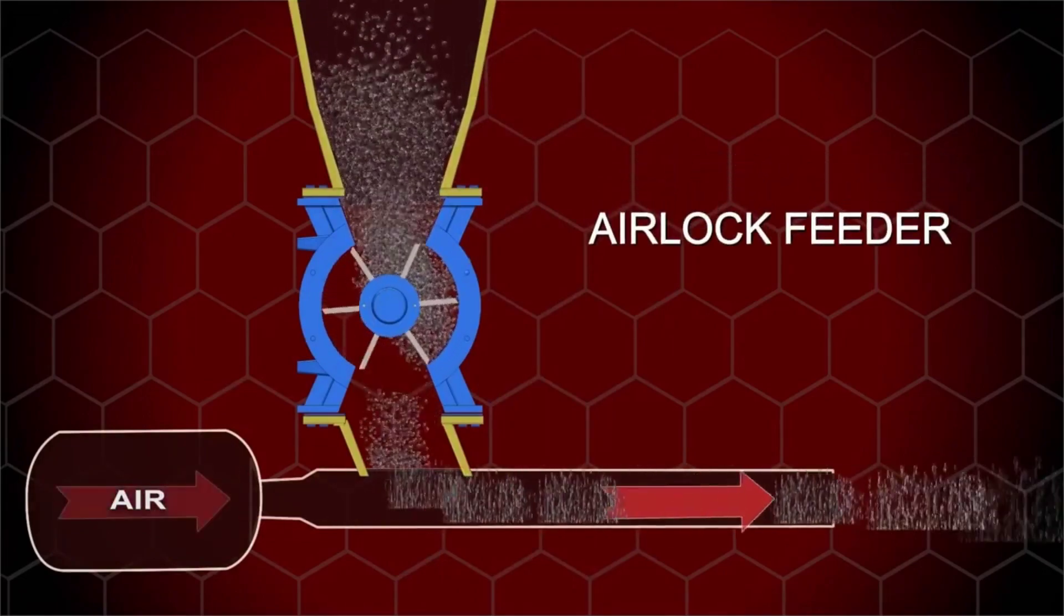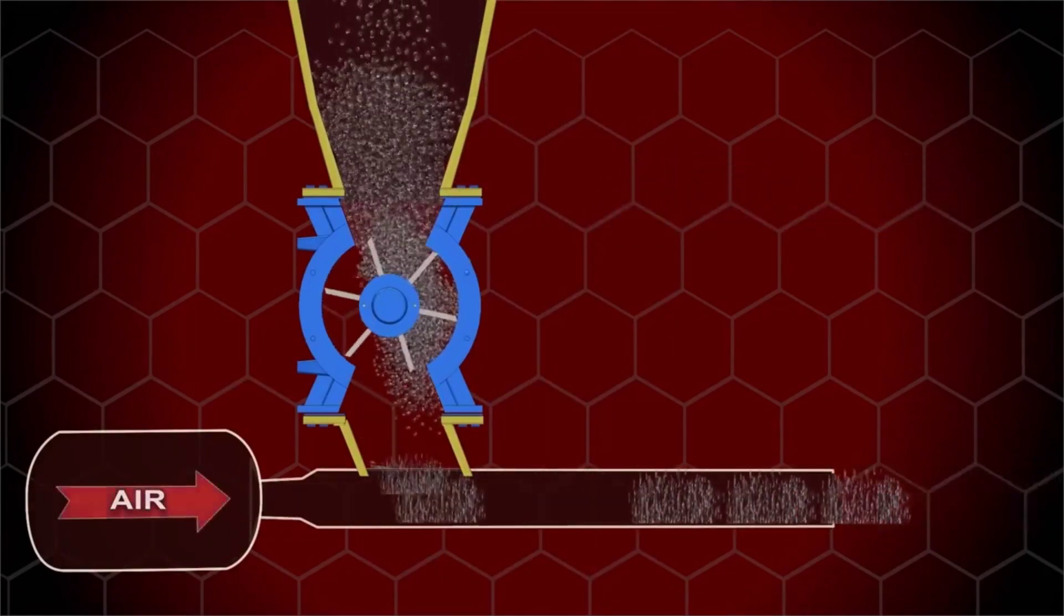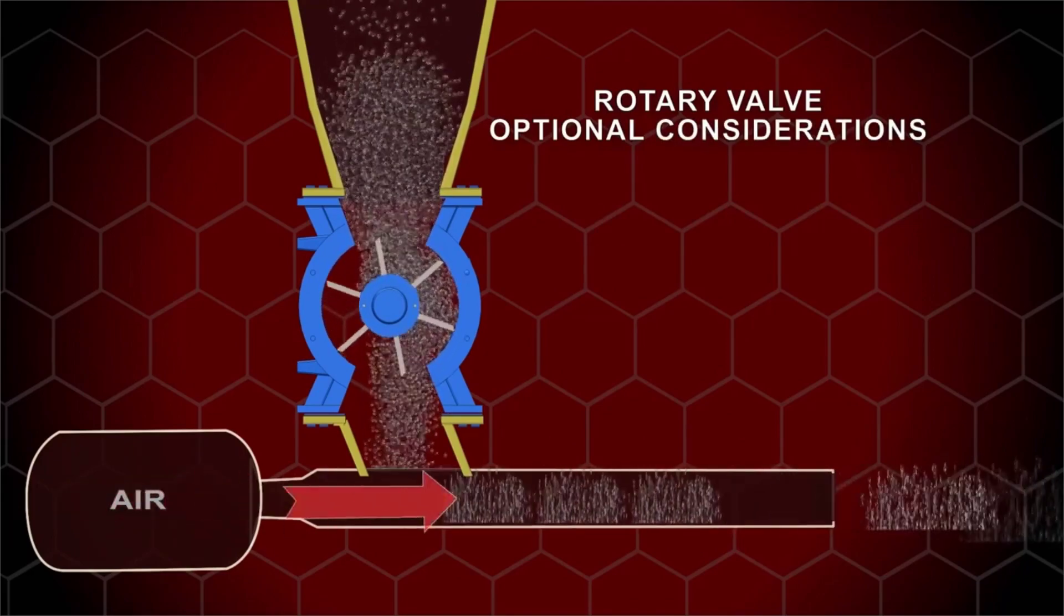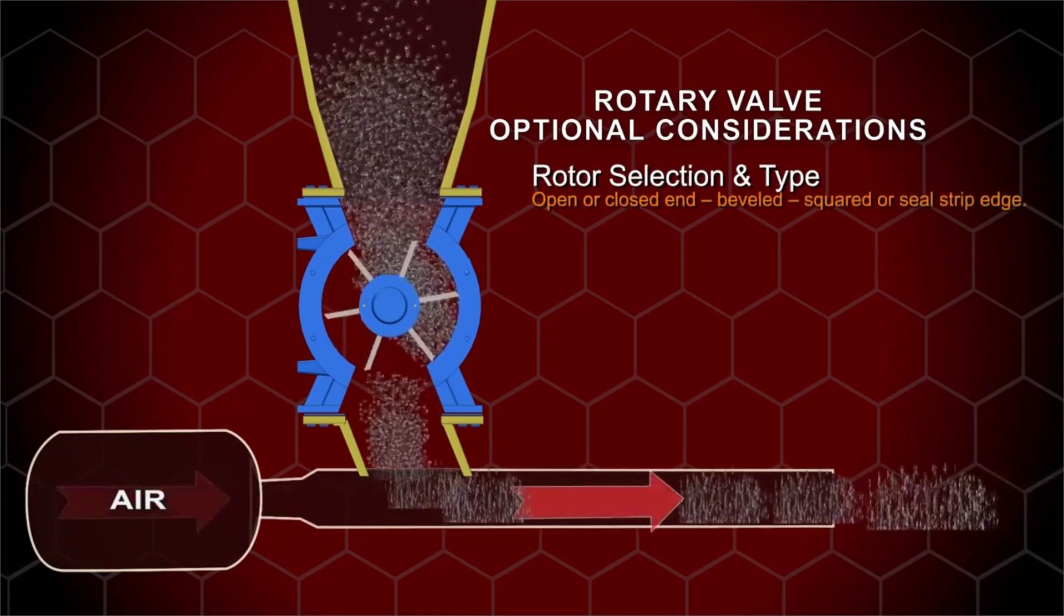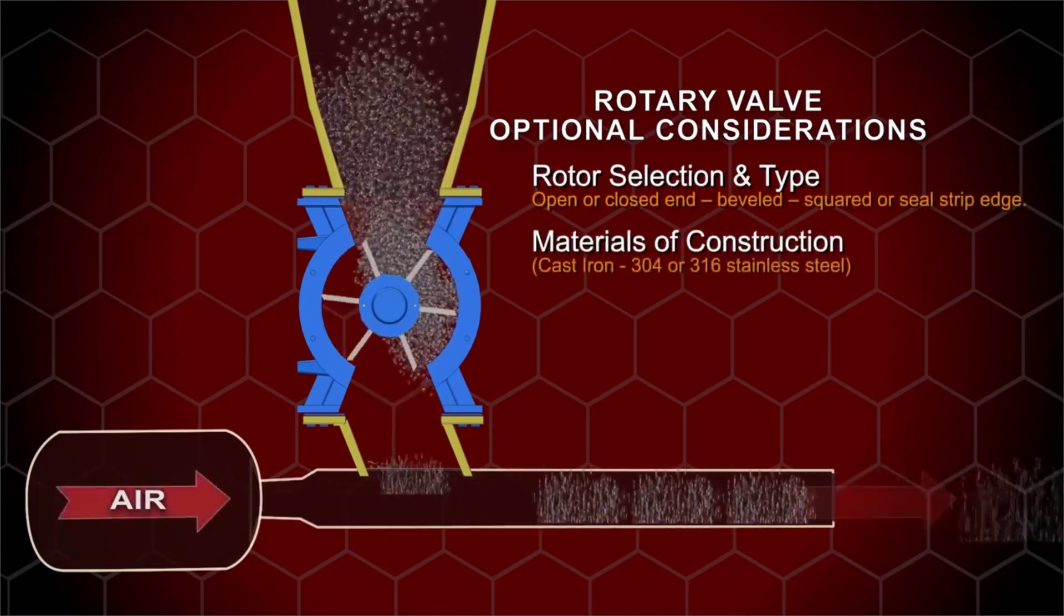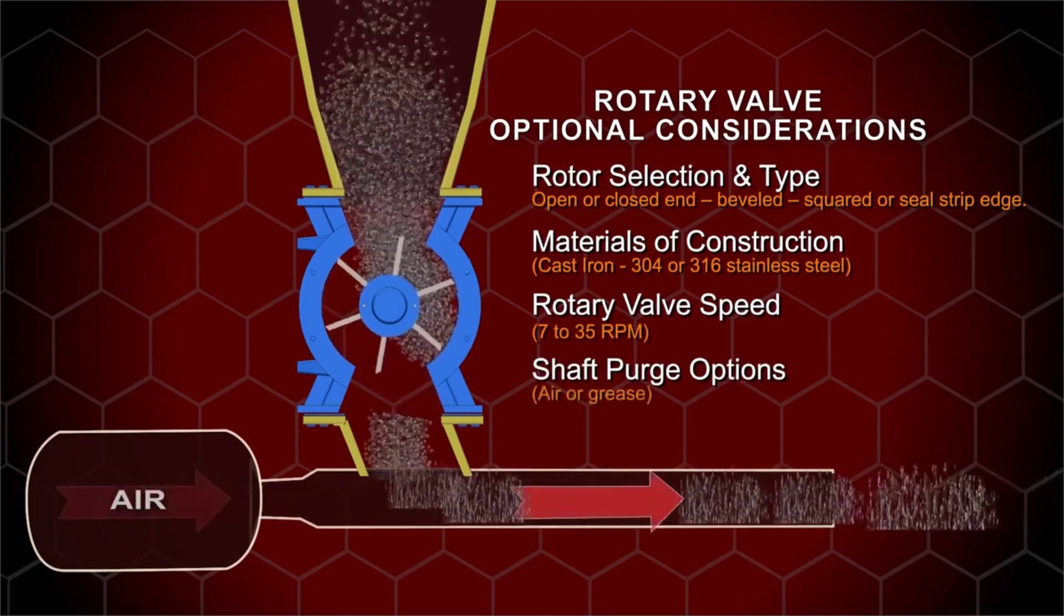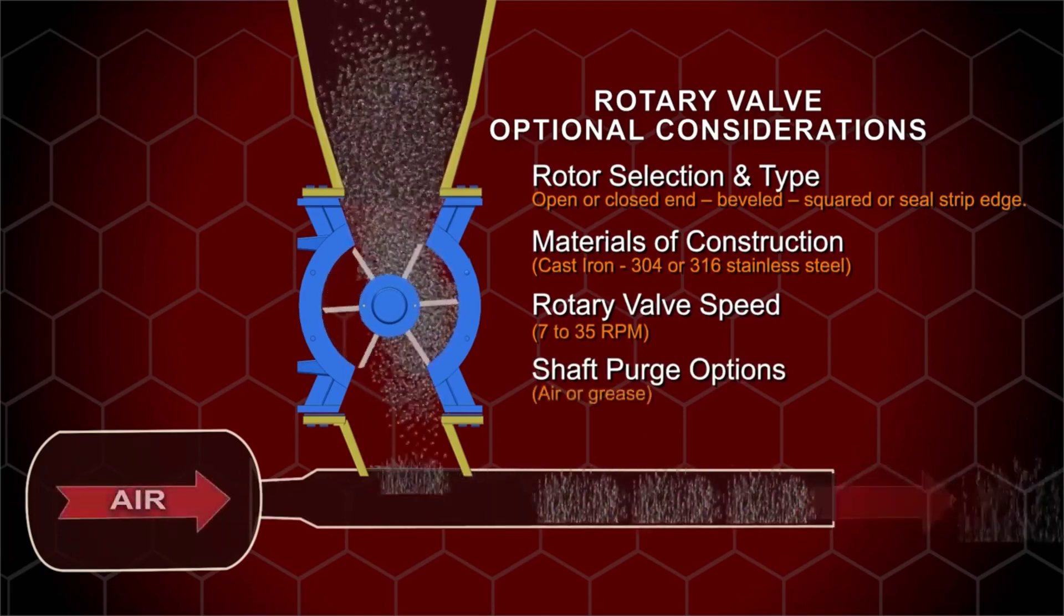In addition to the airlock options shown, the following could also be applied: rotor selections and type, materials of construction, rotary valve speed, and shaft purge options to ensure that your rotary valve operates smoothly.